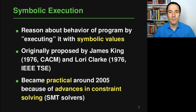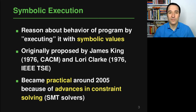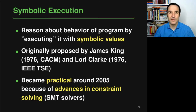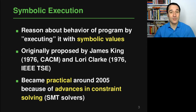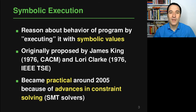This idea of symbolic execution is pretty old, at least in terms of what old means in computer science, because it was proposed by King and then refined by Laurie Clark in the 80s. It has been around for quite a while without really being popular, but around 2005 it became popular and practical again because of advances in a different subfield of computer science — namely advances in constraint solving, specifically SMT solving. This is a critical component of the whole idea: whenever an SMT solver gets much faster, symbolic execution also works much better. Around 2005 the SMT solvers were fast enough to make symbolic execution practical.